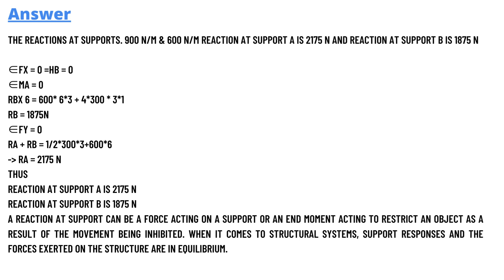To solve this further, sum of FX equals 0, HB equals 0, and MA equals 0. So RB times 6 equals 600 times 3 times 3 plus 4 times 300 times 3 times 1.